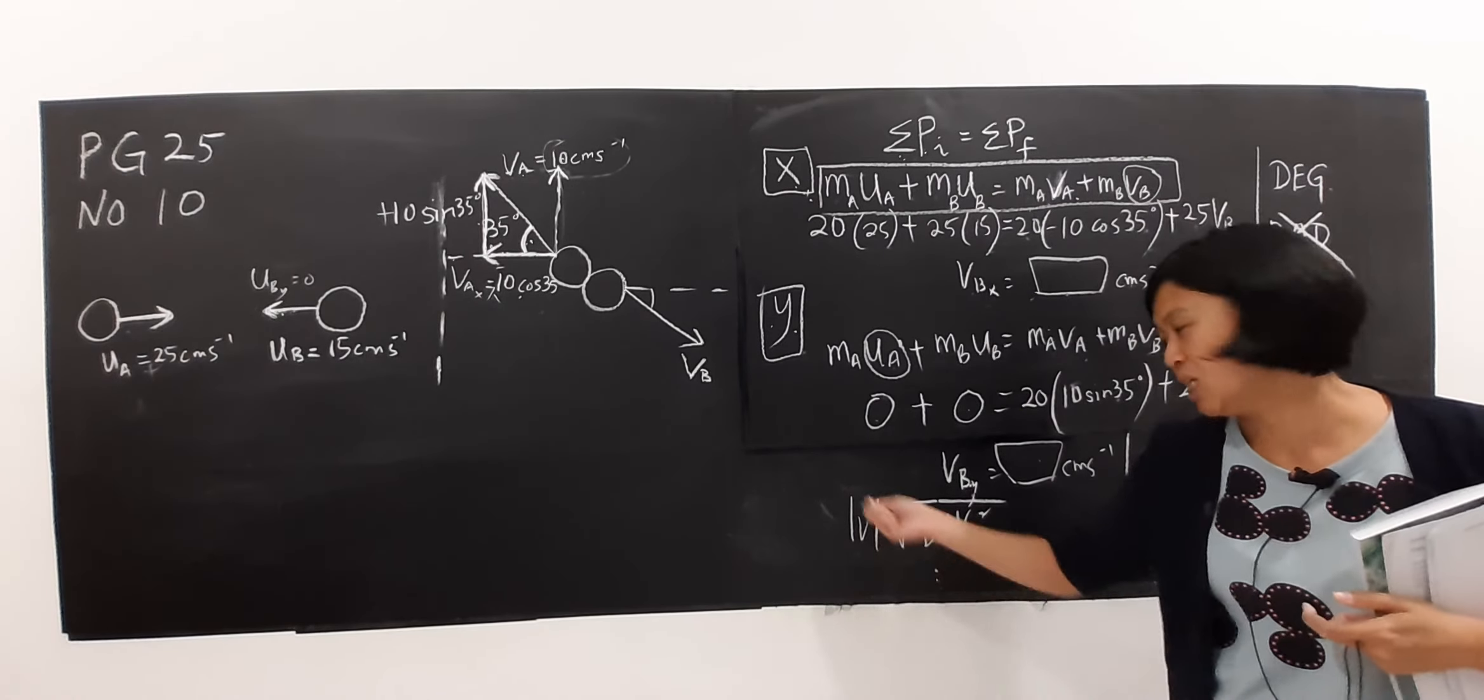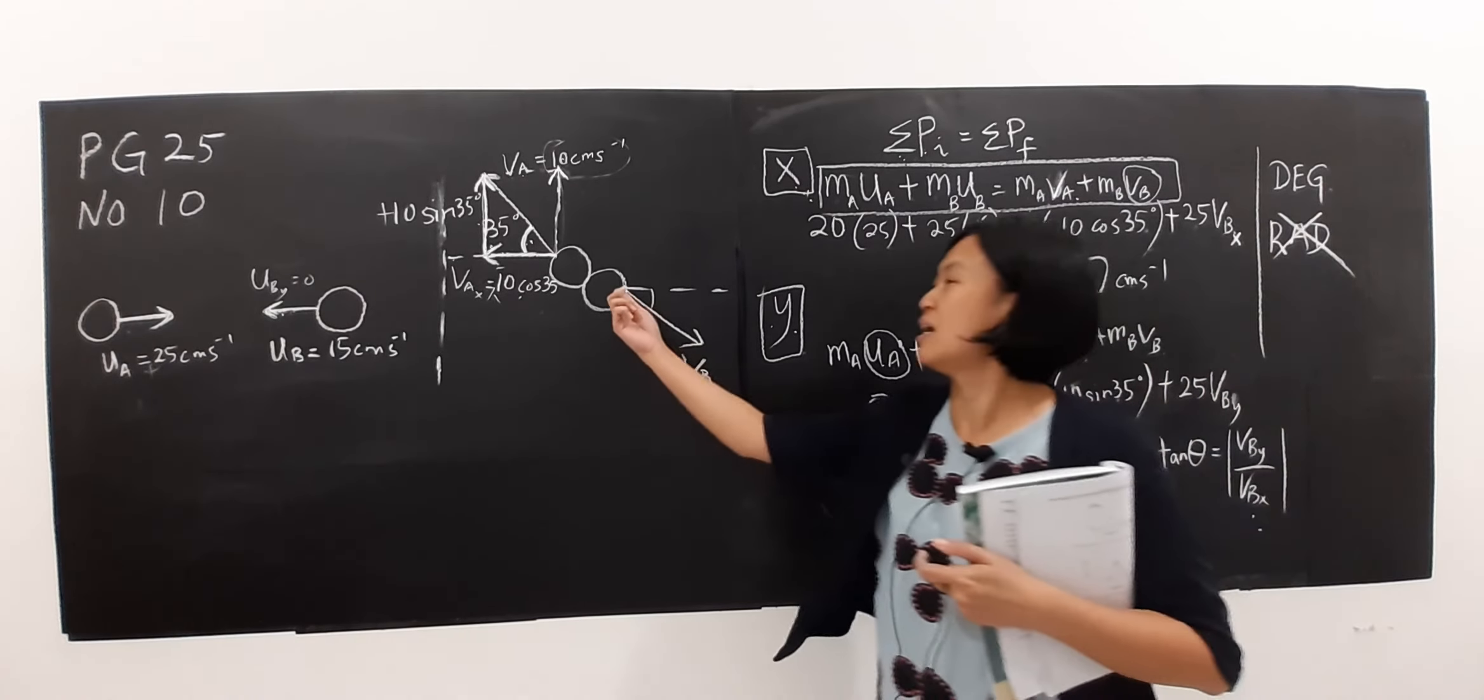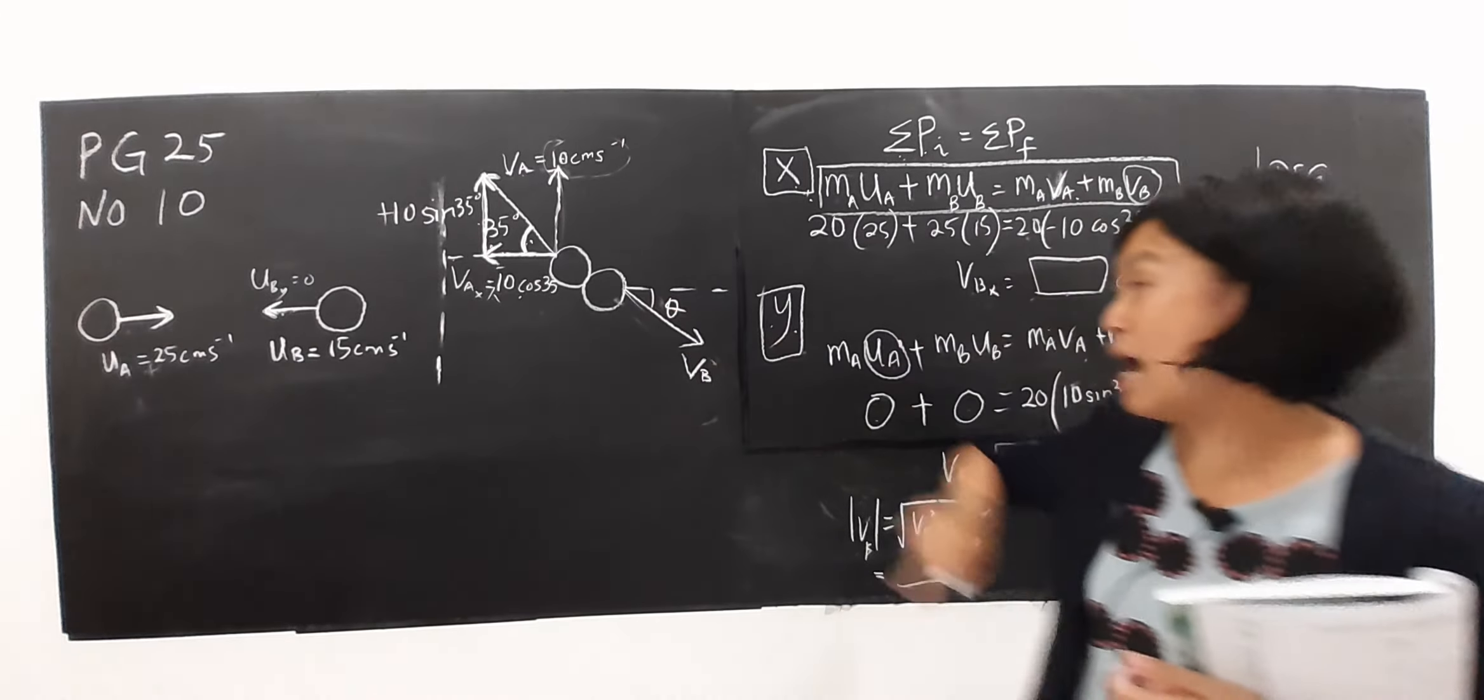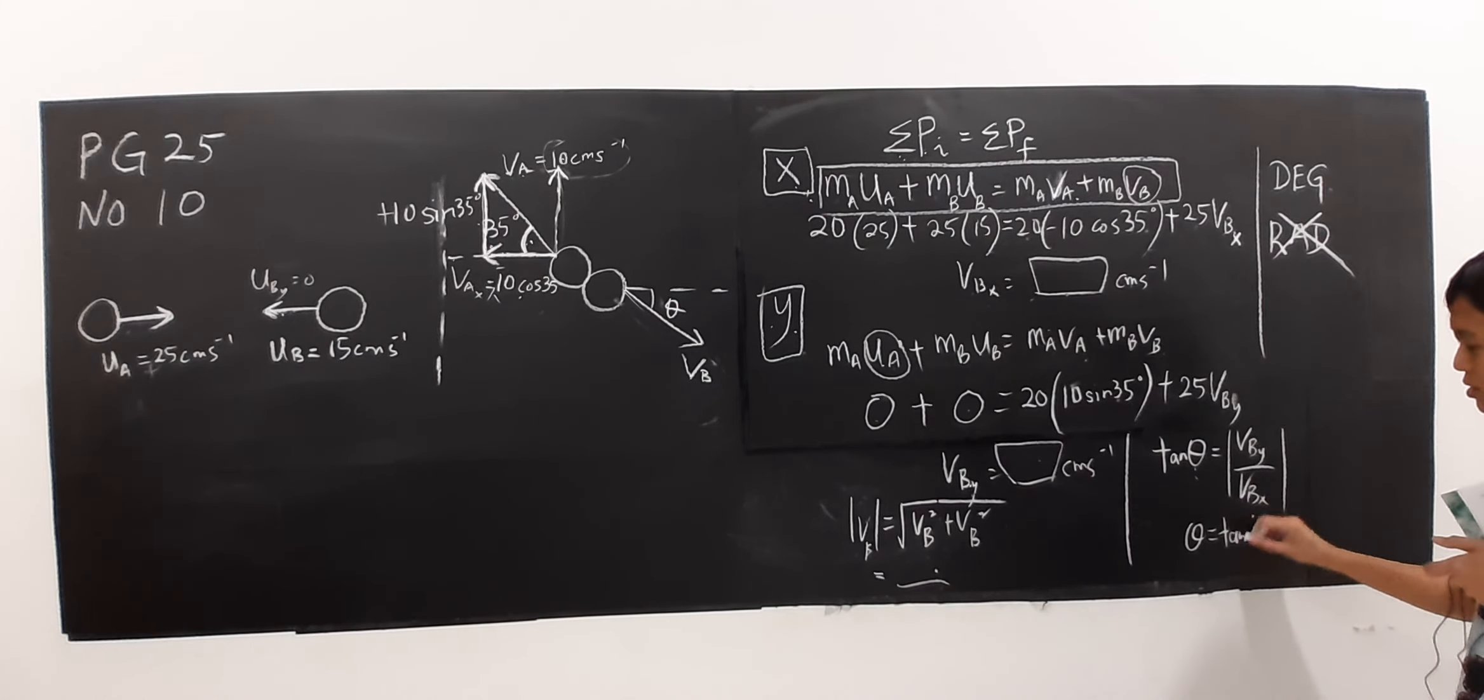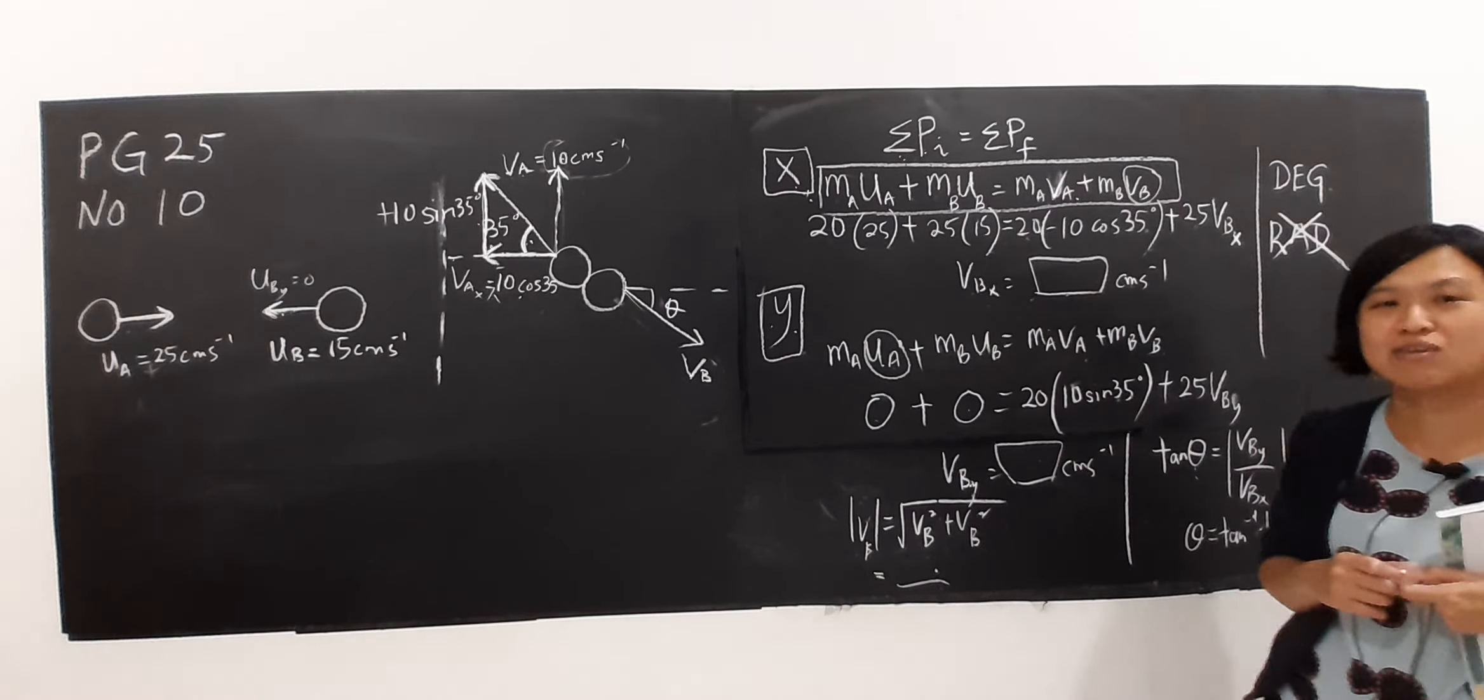So the value that you get here, this VB, is the value they want. If they ask for direction, I will have to find this angle. So here you should solve for it, you will get inverse tangent of this value. So roughly this is the way to solve this question. That's all, bye.